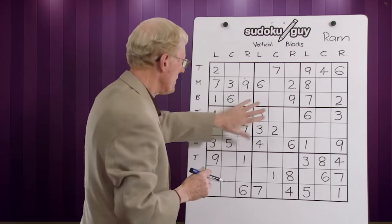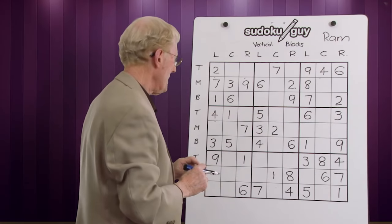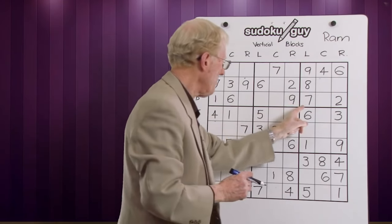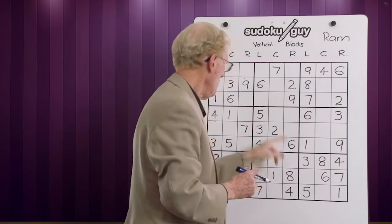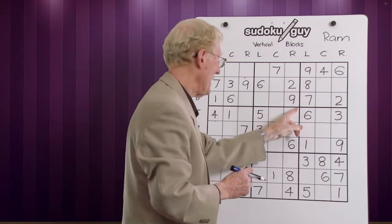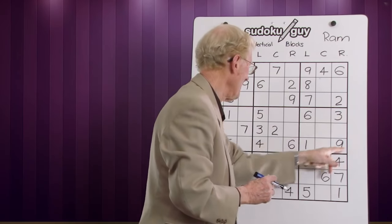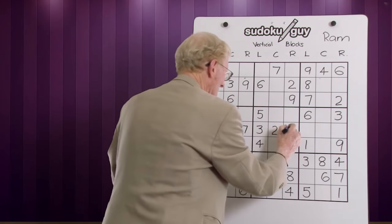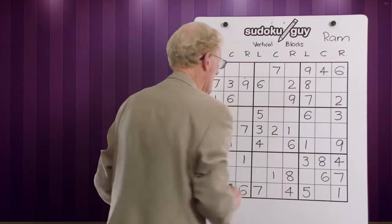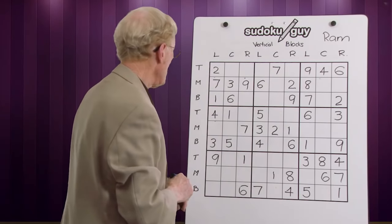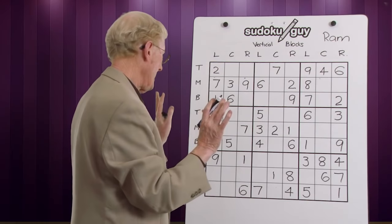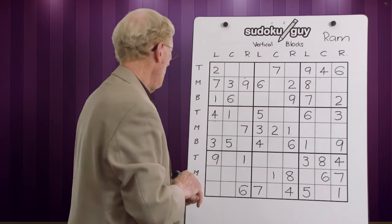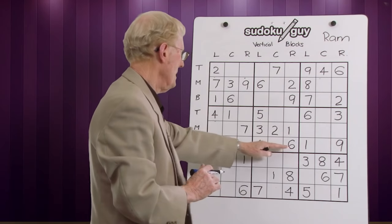Let's now go to these three blocks. Ones to begin with. We have a one on the top here in this block. We have a one on the top here in this block. Therefore, we need a one in them. Well, here we have a one on the bottom of this block. And therefore, in this block, the one has to be in the middle. And there's only one place for it to go, and that's there. That's neat. Next, go to the twos. There's only one two - forget it. Threes - we've got all the threes: bottom, middle, and top. Fours - we have two fours, a top and a bottom.